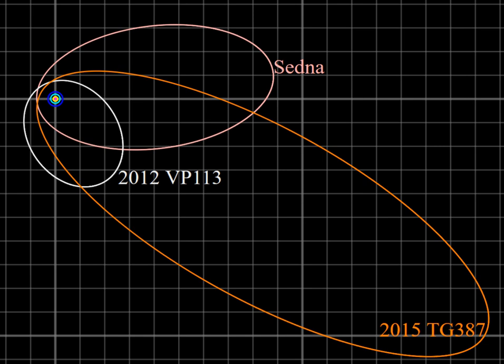The sednoids' orbits cannot be explained by perturbations from the giant planets, nor by interaction with the galactic tides. If they formed in their current locations, their orbits must originally have been circular; otherwise accretion — the coalescence of smaller bodies into larger ones — would not have been possible, because the large relative velocities between planetesimals would have been too disruptive. Their present elliptical orbits can be explained by several hypotheses.